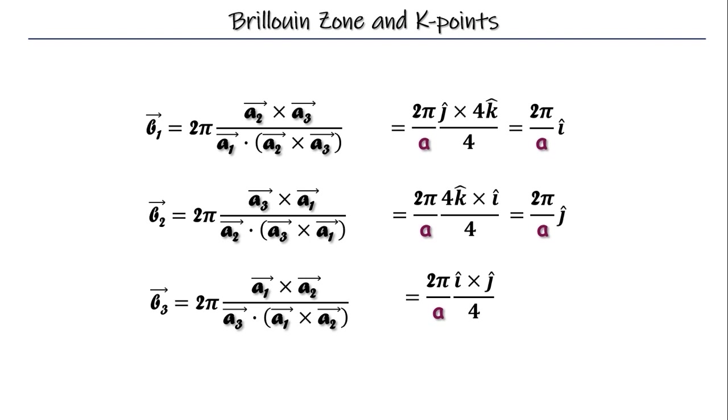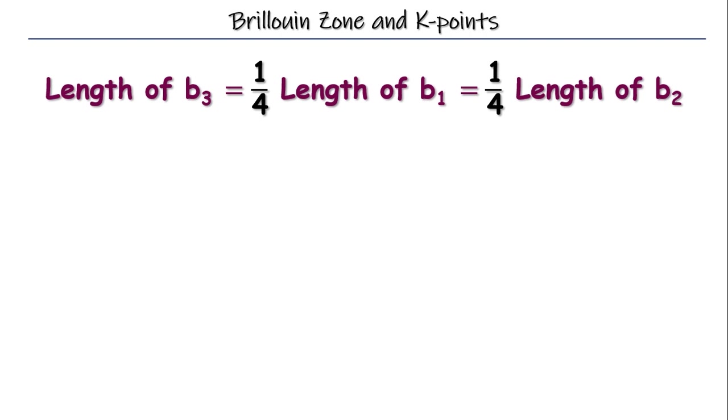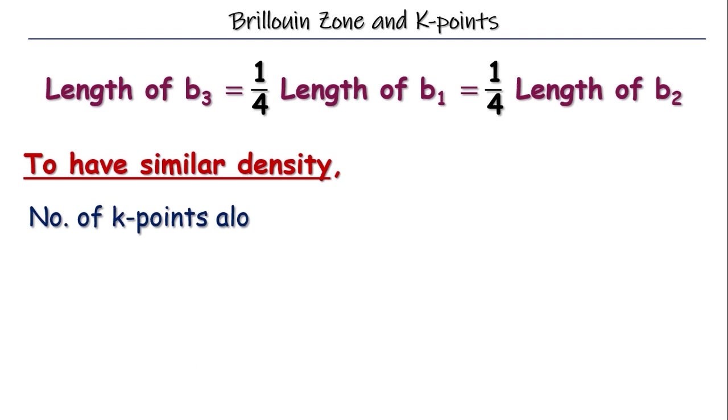Clearly, the length of the reciprocal vector b3 is one-fourth of b1 and b2. So, to have similar density as per the rule of thumb along b3 or along kz, number of k-points in this direction also should be one-fourth of the number of k-points along kx and ky. So, the correct choice for k-points would be 8 x 8 x 2. I think there is no confusion anymore.